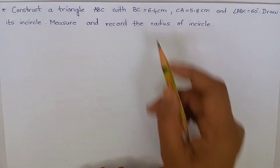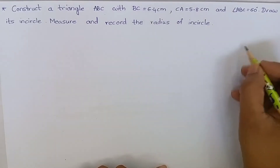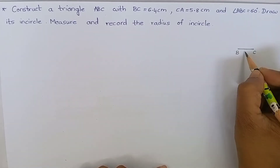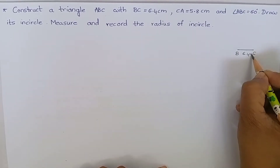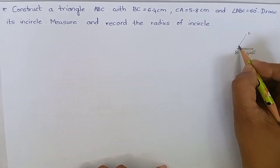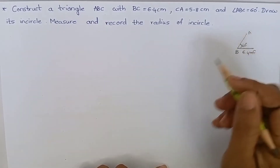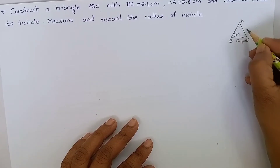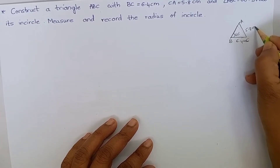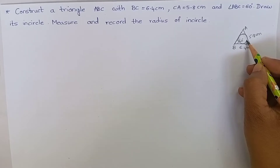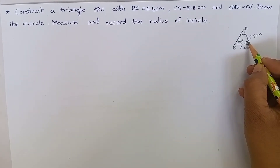First, let's draw a rough diagram. BC is 6.4 cm. Let me take the base as BC. Angle ABC is 60 degrees and CA is 5.8 cm. Draw its incircle — that means we have to draw a circle inside the triangle which touches all three sides of the triangle.